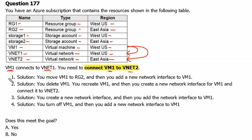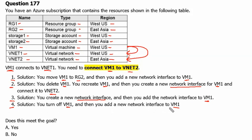Four versions of this question are available. Version 1: you move VM1 to RG2 and then add a new network interface to VM1. Version 2: you delete VM1, recreate VM1, create a new network interface for VM1, and connect it to VNet2. Version 3: you create a new network interface and add it to VM1. Version 4: you turn off VM1 and then add a new network interface to VM1. The question will appear in the exam with one of these solutions, and you will select yes or no as the answer.